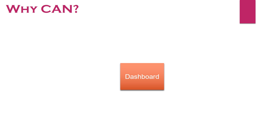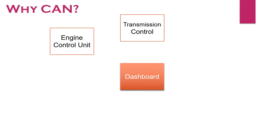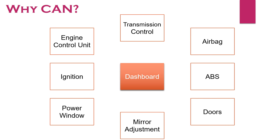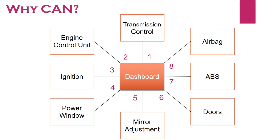In a modern vehicle, there can be more than 70 ECUs for various subsystems — for example, dashboard, engine and transmission control, and many more. There is no doubt that if all communicating nodes are connected one-to-one, the speed of communication will be high, but the network complexity and cost of wires and connectors will also be very high. In this example alone, the dashboard would need eight connectors.